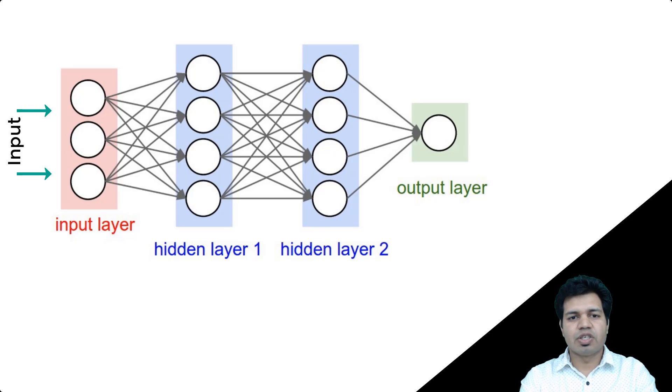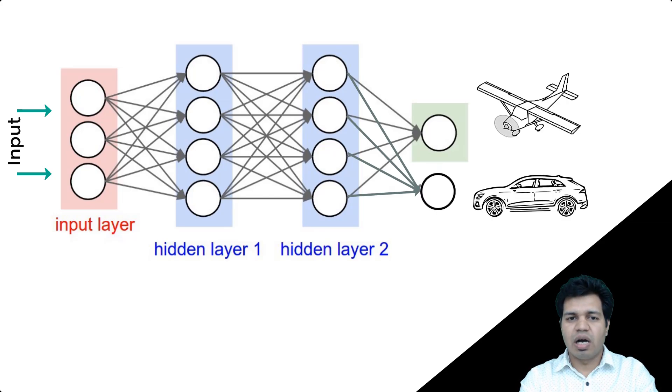Once we reach the output layer, we collect this output for a given input in the model. For example, if we're classifying car and airplane images, each of these output nodes will correspond to a car or an airplane image. The output node with the highest activation will be the output which the model thinks is the best match for the corresponding input.